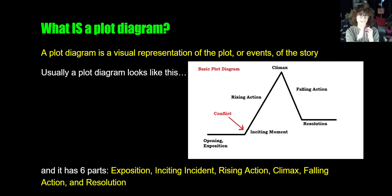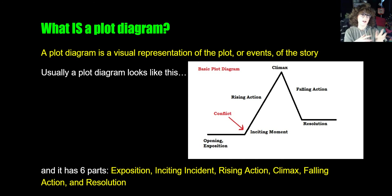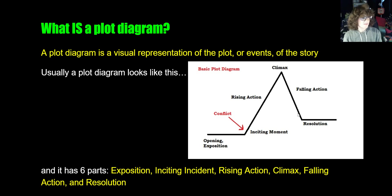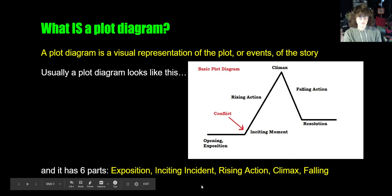Then there's a moment where the conflict begins — that's the inciting incident. Then we climb up the mountain, which is the difficulty and challenge the character is going through, much like climbing a mountain is hard. That's most of the book. At the top of the mountain is the climax, the turning point and most emotionally intense moment. Then we have falling action — the immediate consequences — and the resolution, which are the long-term consequences. So the plot diagram has six parts: exposition, inciting incident, rising action, climax, falling action, and resolution.